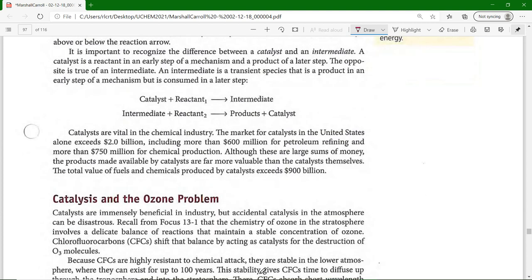A catalyst could react with one reactant to give an intermediate. An intermediate could react with another reactant to give products, and then the catalyst comes back. Catalysts are used up and then regenerated. Intermediates are produced and then used up.